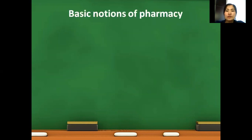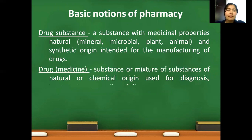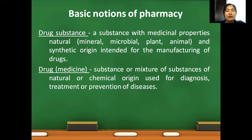Pharmaceutical terminology. Basic notions of pharmacy. The first basic notion is drug substance — it is a substance with medicinal properties, which can be of natural and synthetic origin and used for manufacturing of drugs. The second notion is drug or medicine — it is a substance or mixture of substances of natural or chemical origin used for diagnosis, treatment, or prevention of diseases.